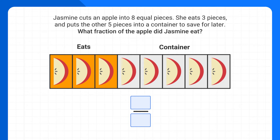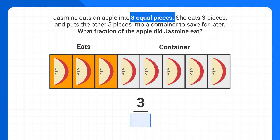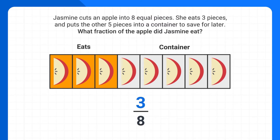We need to identify the fraction of the apple that Jasmine eats. The problem tells us, and we can see in the picture, that Jasmine eats three pieces, so this will be our numerator. The denominator of our fraction is the total number of pieces of the apple. The problem tells us there are eight pieces, so our denominator is eight. Jasmine eats three eighths of the apple.